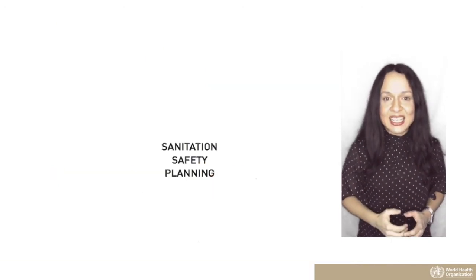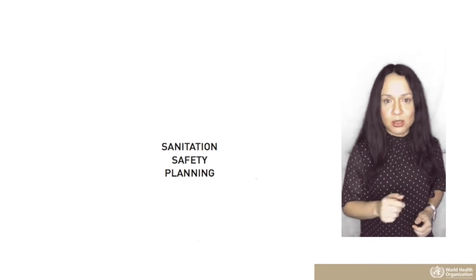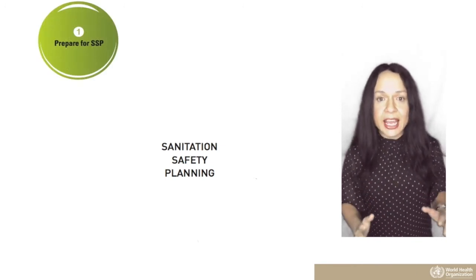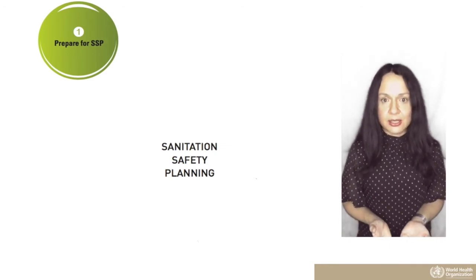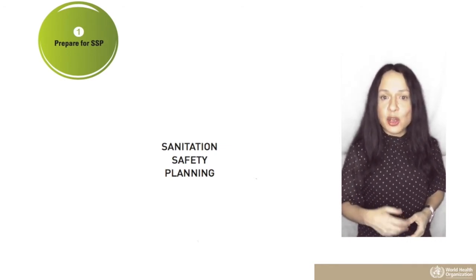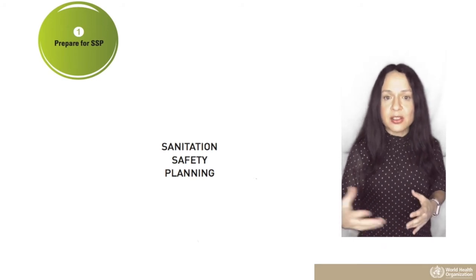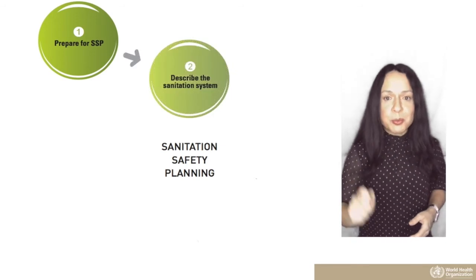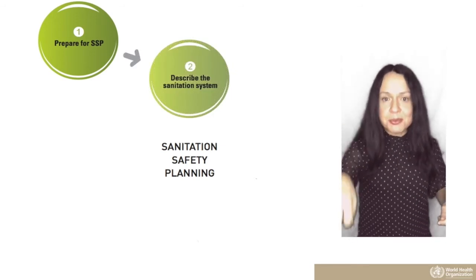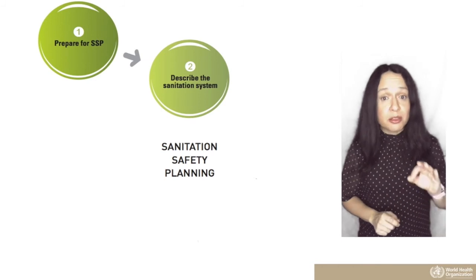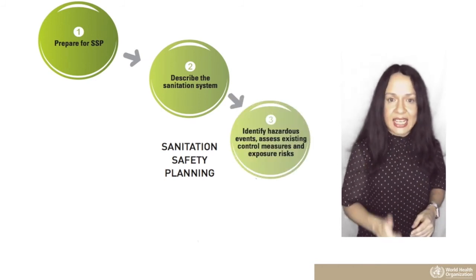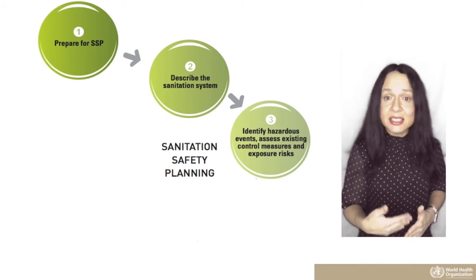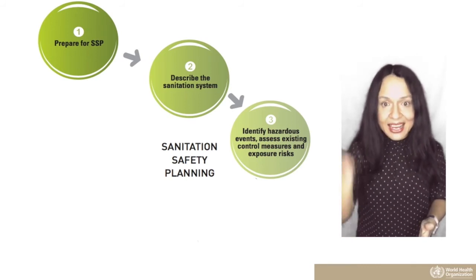In total, the SSP methodology consists of six modules. In Module 1, we define the priority area and the boundaries of the sanitation system, define the objectives, and bring together the steering committee and the SSP members. In Module 2, we prepare the complete description of the sanitation system. In Module 3, we identify hazards, hazardous events, and carry out a health risk assessment, identifying at the end the highest risks.